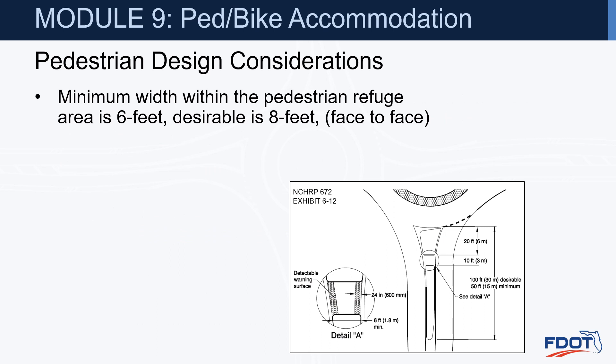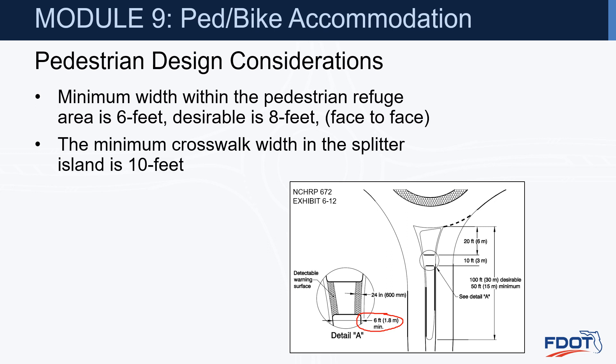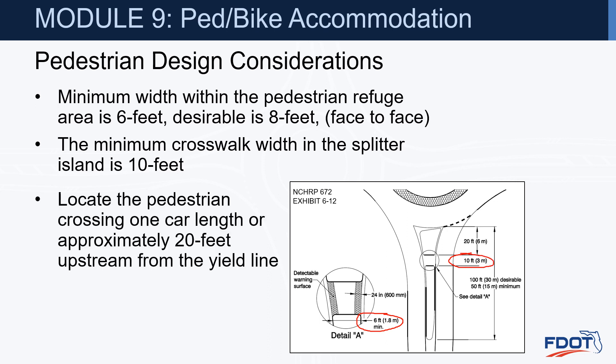Minimum width within the pedestrian refuge area is 6 feet, with 8 feet desirable, providing enough space for somebody pushing a stroller or a bicyclist to wait in this refuge area. The minimum crosswalk width within the splitter island is 10 feet. The location of the pedestrian crossing should be one car length, or approximately 20 feet, upstream from the yield line.